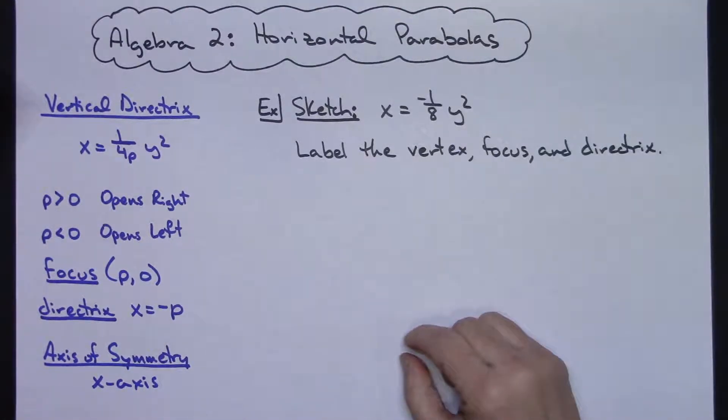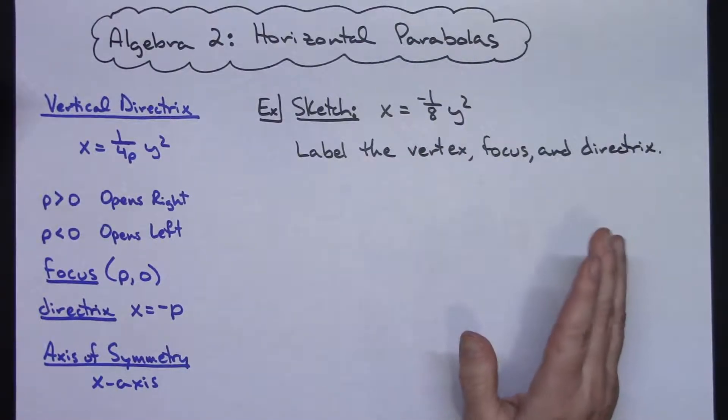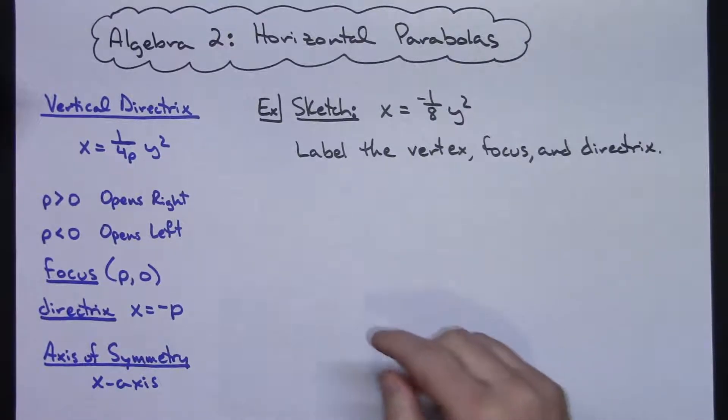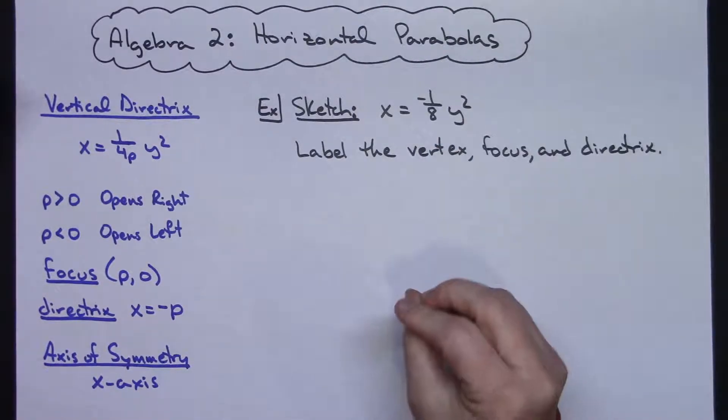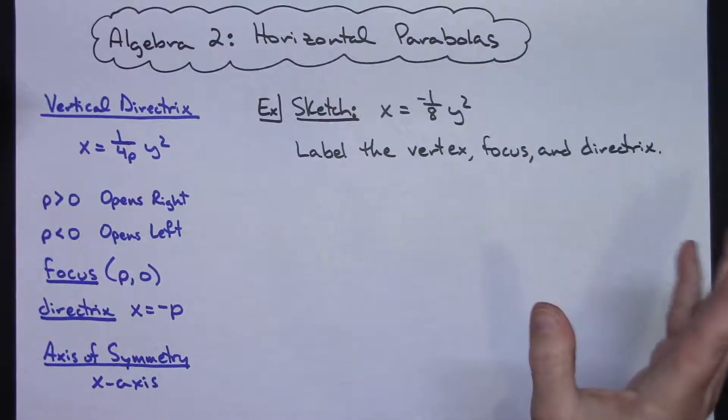In this video I'm going to be taking a look at how to go about sketching a horizontal parabola and then also labeling the vertex, the focus, and the directrix. Over here in blue on the left-hand side I have summarized everything that you're going to have to have memorized to be able to help you do this.